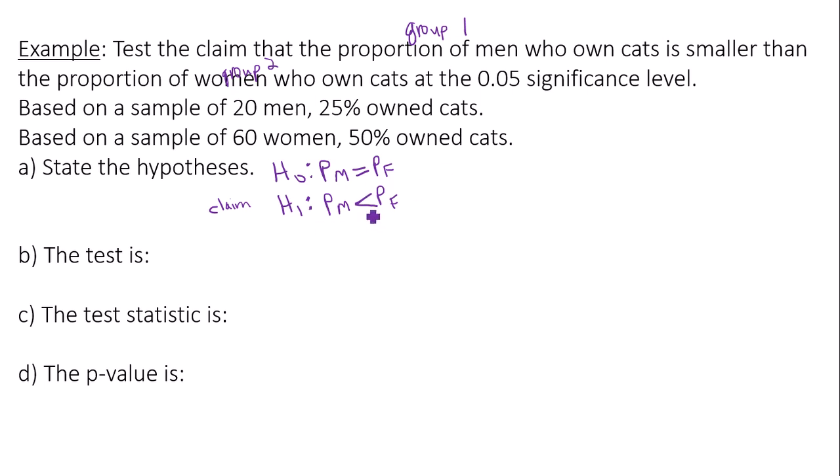So the test is, because I have a less than sign in the alternative hypothesis, the test is left tail. Now I have to find the test statistic and the p-value.